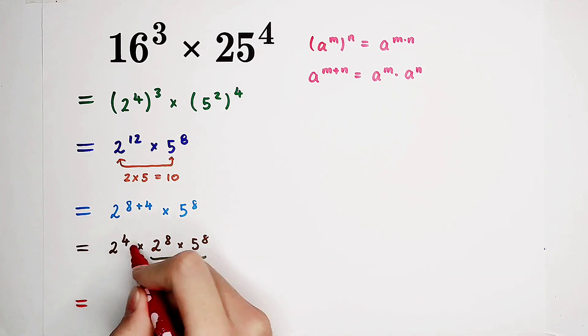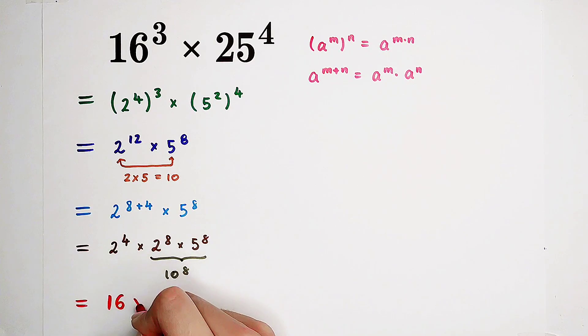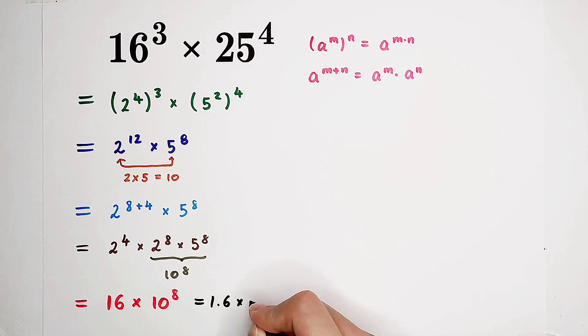So this is 2 to the power of 4 is 16, then times 10 to the power of 8. So the answer is 16 and then 8 zeros. Or you can also write it in scientific notation. It is 1.6 times 10 to the power of 9.